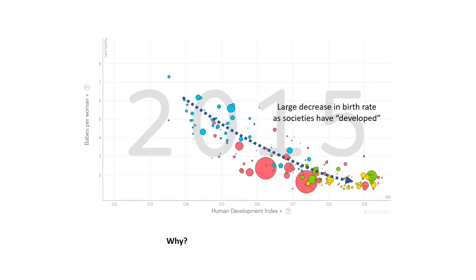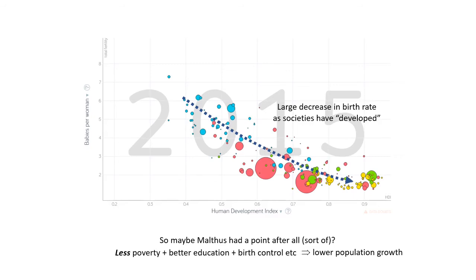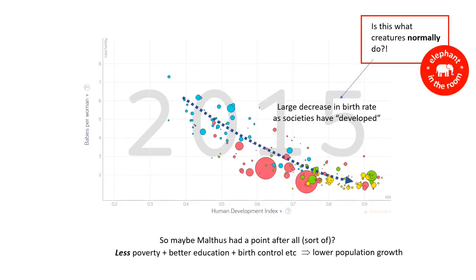So in a way, it turns out that Malthus had a point after all, although not quite in the way he'd envisaged it. The lower poverty and better education and access to birth control that drive down the birth rate are a sort of abstinence — a sort of negative natural check that's reducing and even reversing population growth. It's as if all that Boserupian innovation has somehow resulted in a self-limiting condition for humans. So here's a really tricky question: is this what creatures normally do? As they converge on their maximum peak population — their carrying capacity, it's sometimes called — do they normally start having fewer babies?